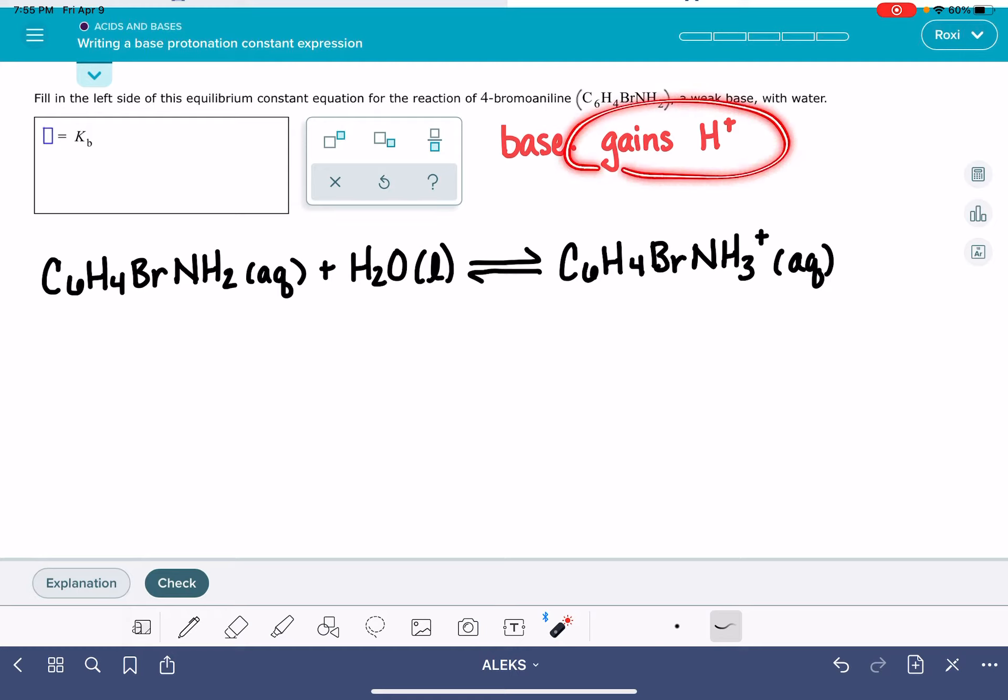The H plus that this molecule is picking up is coming from the water molecule. So that means the water molecule is losing an H plus. So instead of two hydrogens, it only has one hydrogen, and its charge is decreasing by plus one. That converts the water into OH minus, and the OH minus is always going to be aqueous. These reactions where we have a base reacting with water are always going to produce OH minus aqueous, every single time.